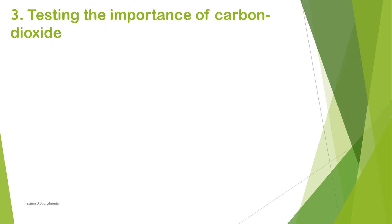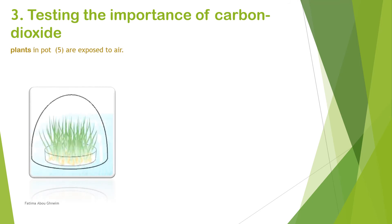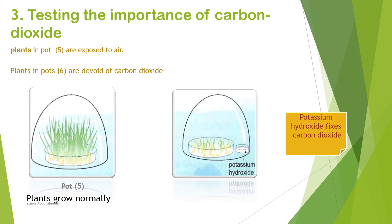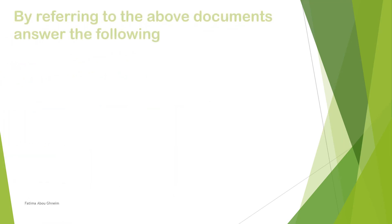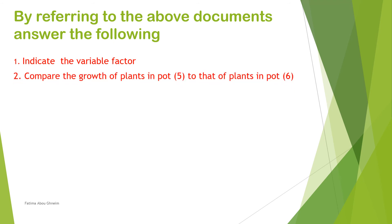Three, testing the importance of carbon dioxide and its effect on the growth of green plants. Plants in pot 5 are exposed to air and grow normally. Plants in pot 6 are devoid of carbon dioxide — potassium hydroxide is used to fix the carbon dioxide — and those plants grow weakly. Indicate the variable factor, compare the growth of plants in pot 5 to that of plants in pot 6, and then conclude.